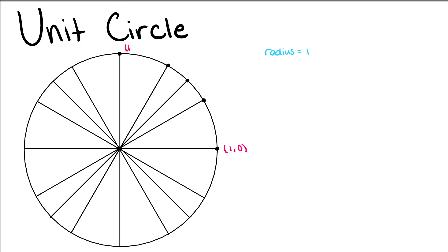We can find it anywhere within our unit circle, but we're going to specifically focus on 30 degrees, 45 degrees, and 60 degrees. Or if we use these degree measurements in radians: pi over 6, pi over 4, and pi over 3 radians. In addition to our 0 degrees or 0 radians and our 90 degrees or pi over 2 radians.